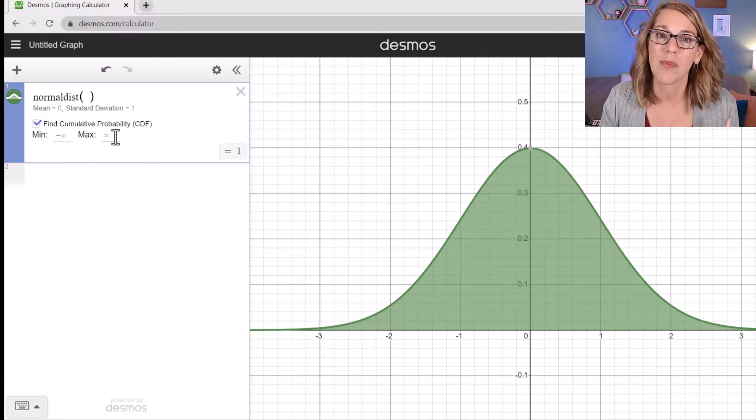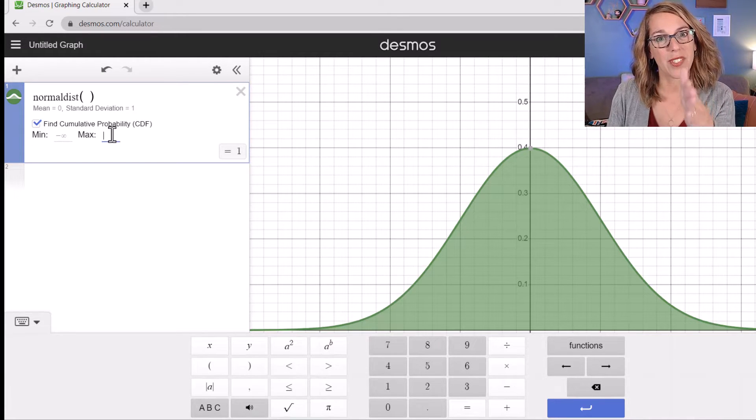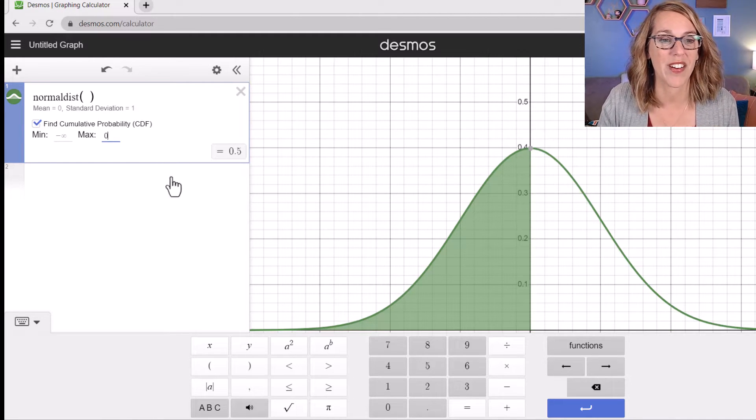Let's say instead that we wanted the left half, and I'm going to go from a minimum of negative infinity, and I want to go to a maximum of zero right there in the middle. And it gives me that 0.5 area.